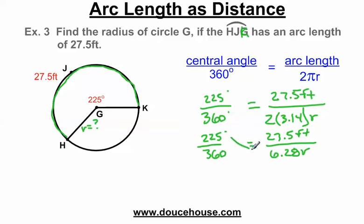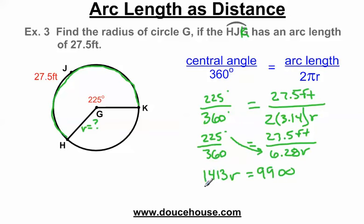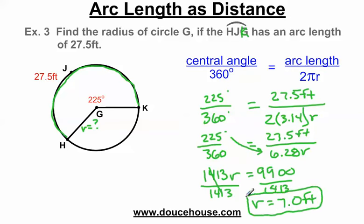Cross multiplying: 225 times 6.28 gives me 1,413r, which equals 360 times 27.5, roughly 9,900. Dividing both sides by 1,413 gives r equals 7. So the radius is 7 feet — don't forget the units. I found the radius to be 7 feet.